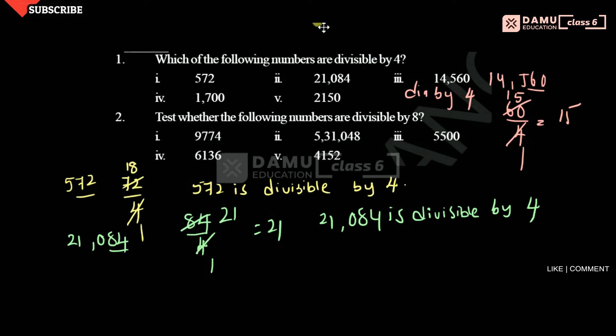Next one is 1700. The last two digits are 00. Zero divided by 4 is 0. Yes, it is also divisible by 4.